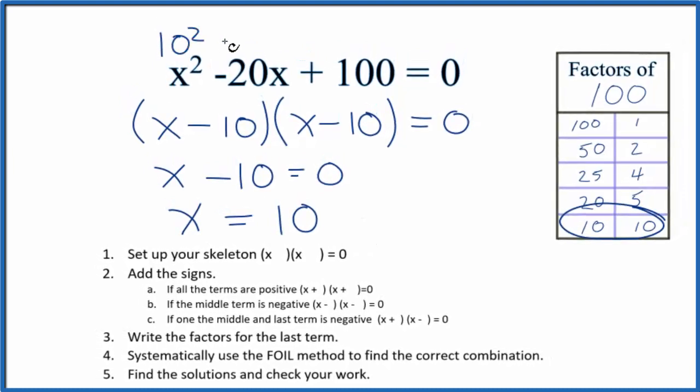If we put 10 in for x: 10 squared minus 20 times 10 plus 100, if you add all of these up it does equal 0. So this is the solution for this equation. We also have the same thing here, so if this were 10, this would be 0 and it would be a true statement. So the solution is x equals 10.